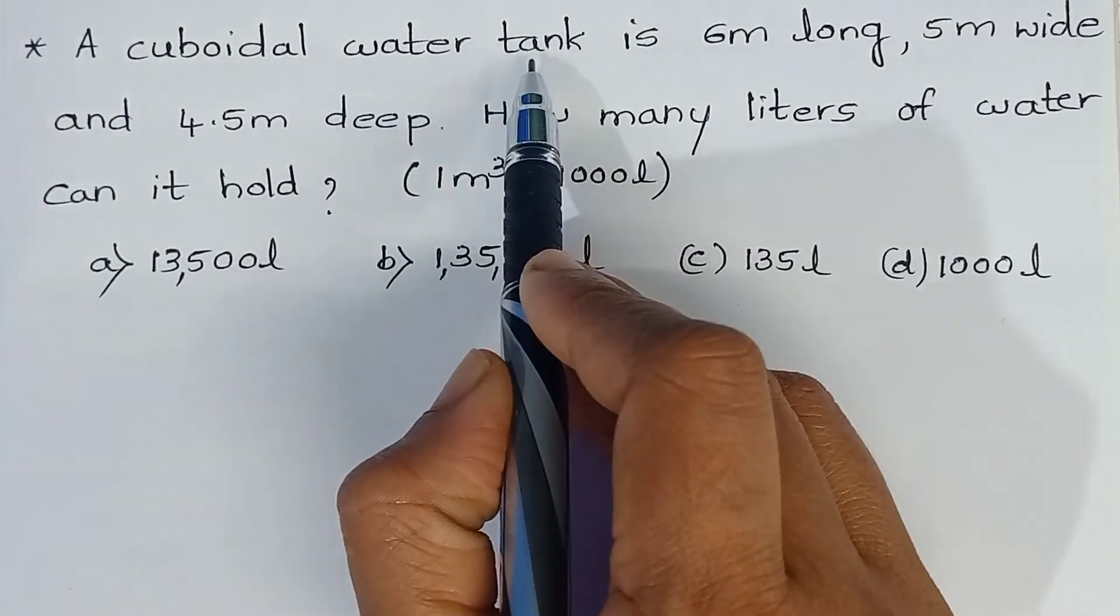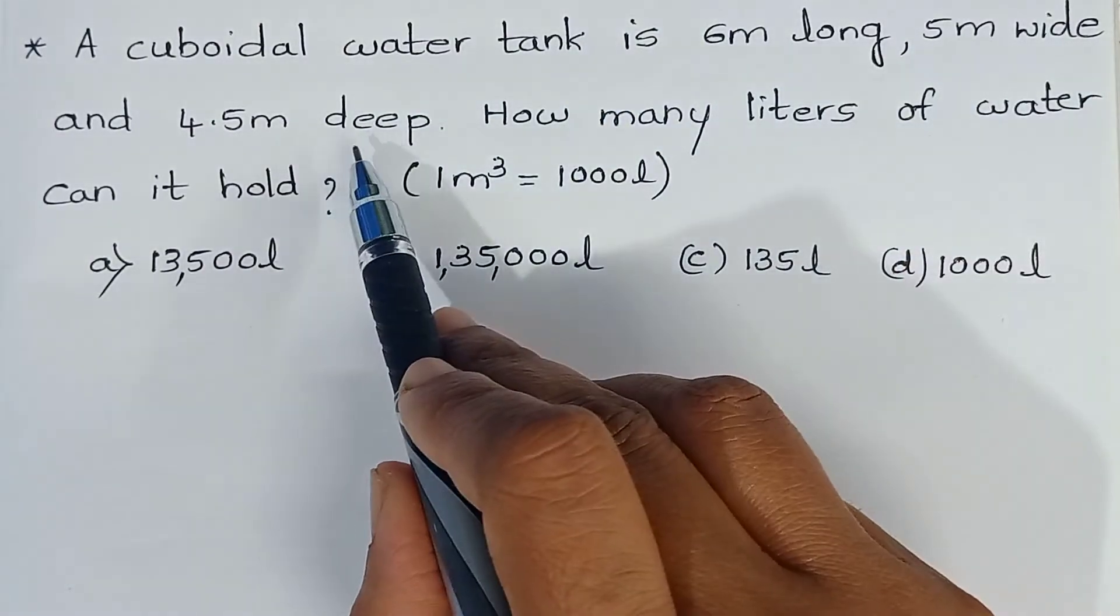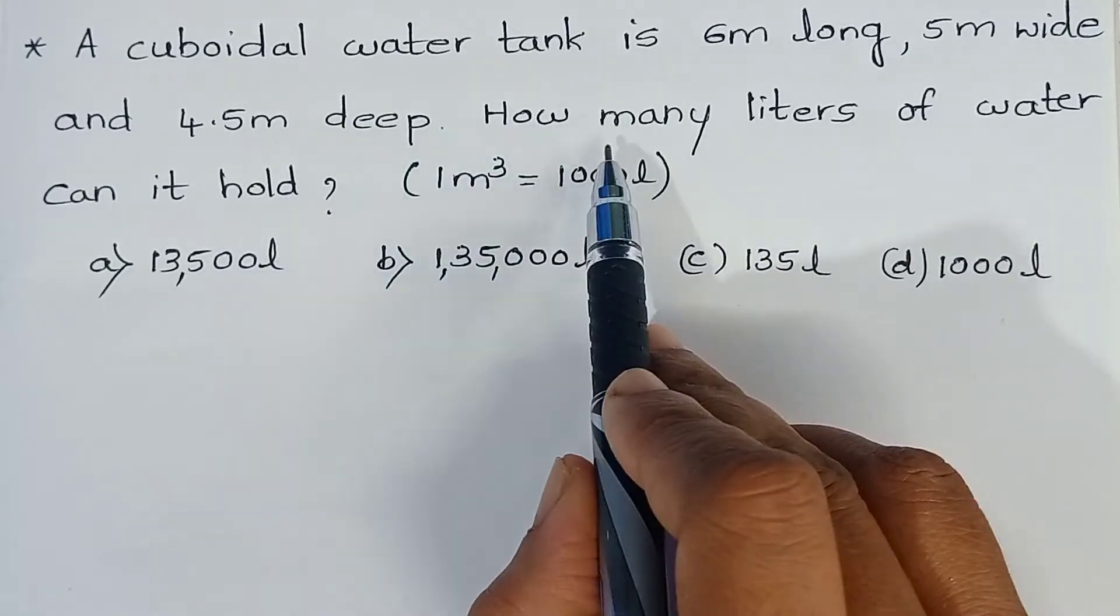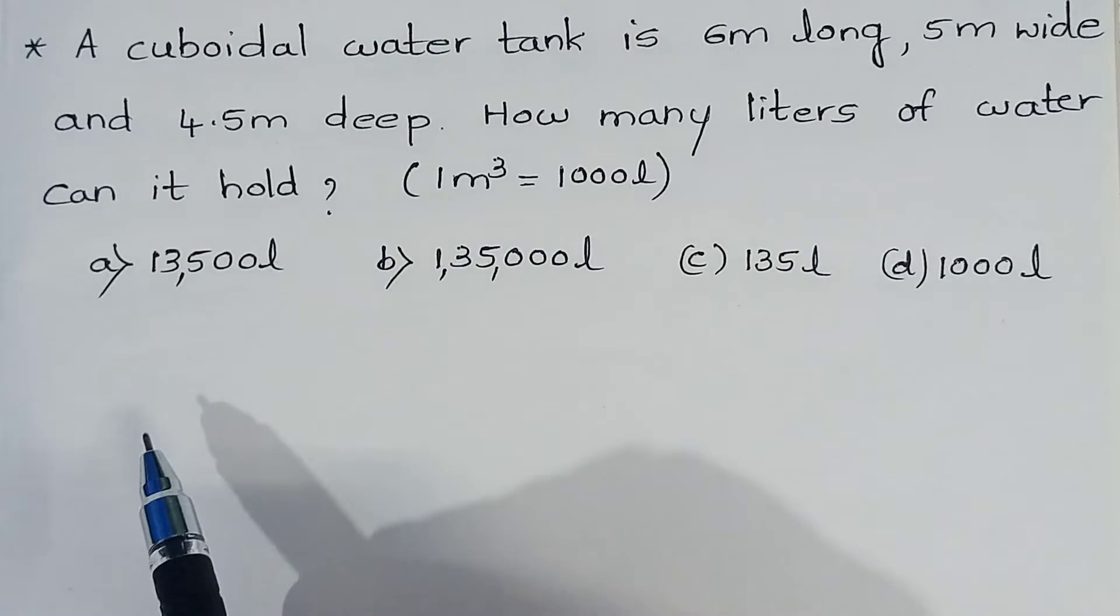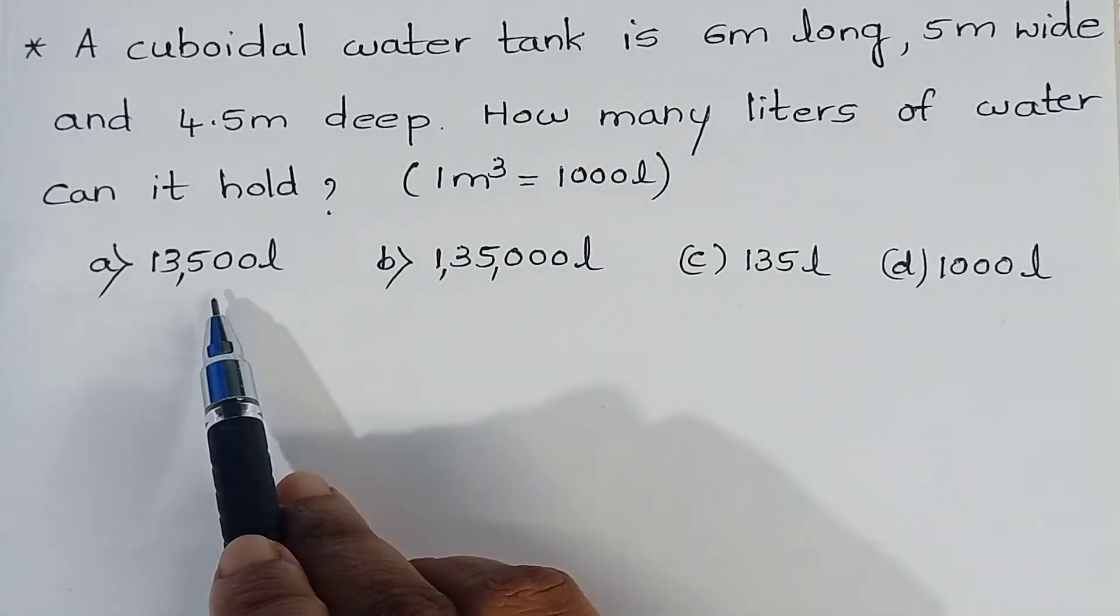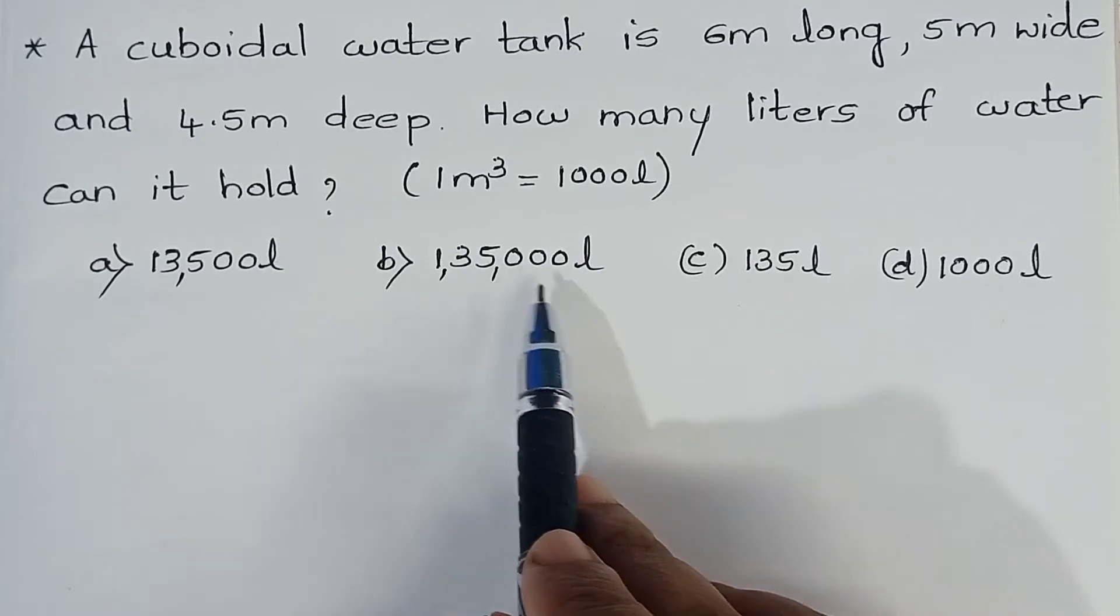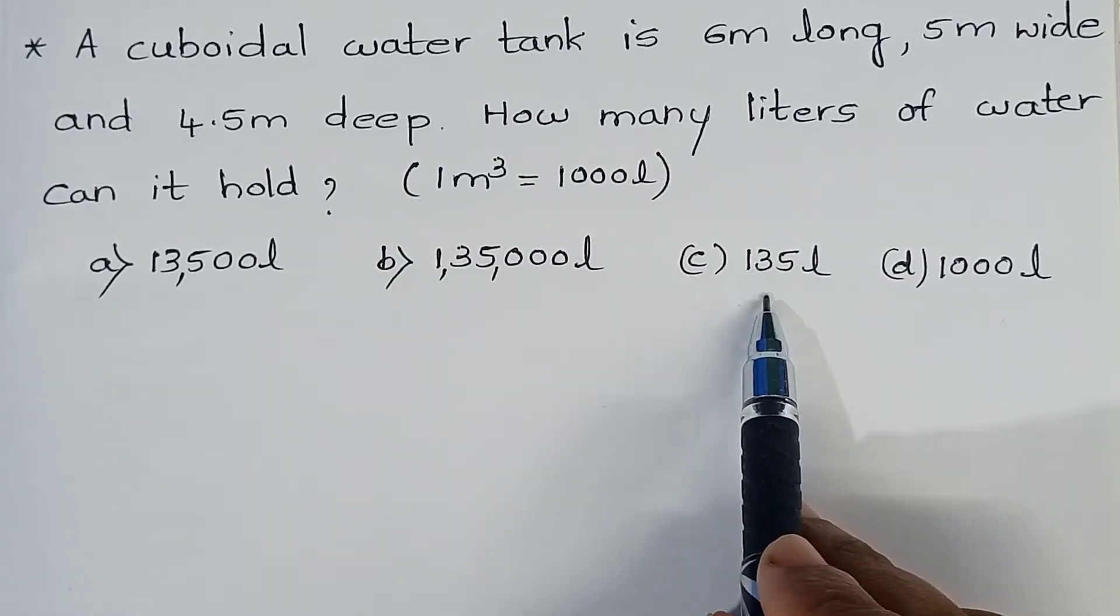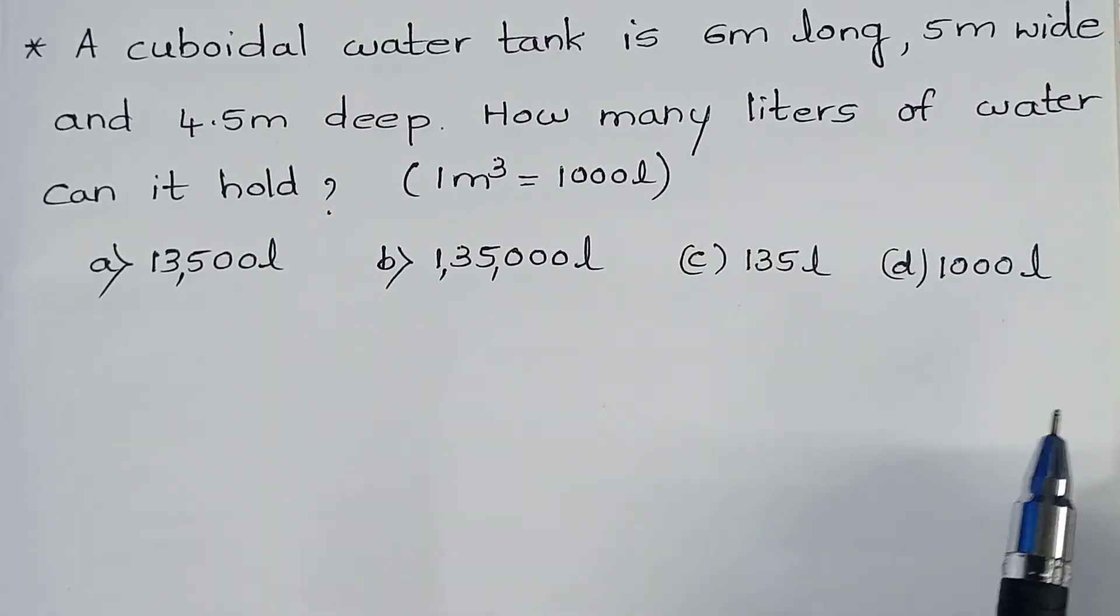A cuboidal water tank is 6 meter long, 5 meter wide and 4.5 meter deep. How many liters of water can it hold? And they have given 4 options: 13,500 liter, 135,000 liter, 135 liter and 1000 liter. And we have to mark the correct option.